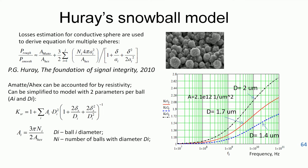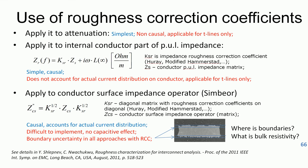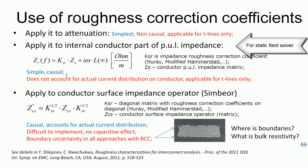The question is: how do we apply roughness correction coefficients? They are constructed to apply to attenuation — this is the simplest non-causal approach, giving you the attenuation or insertion loss adjustment. Another causal approach is to apply them to the conductor's internal per-unit-length impedance, as shown here. Any roughness correction coefficient can be used this way, but this approach doesn't account for the fine structure of the current on the surface.